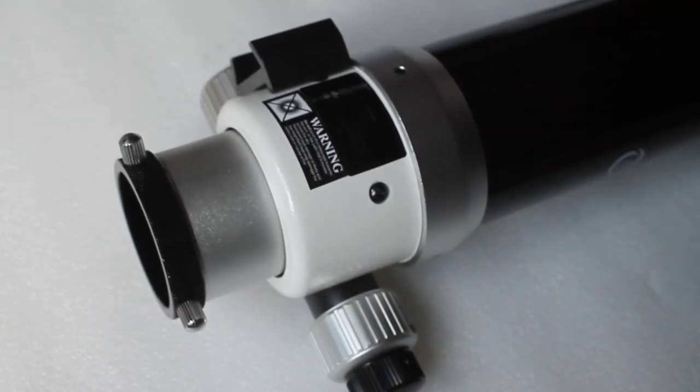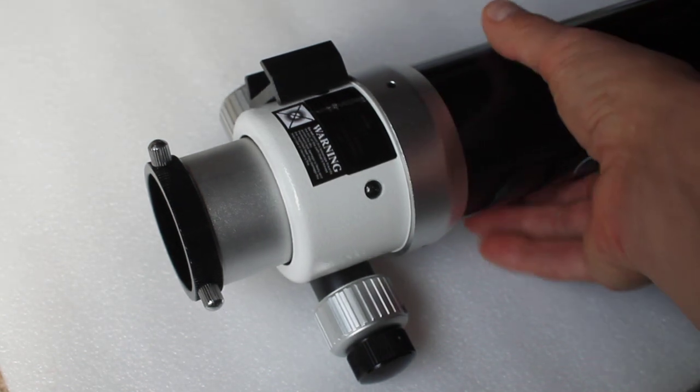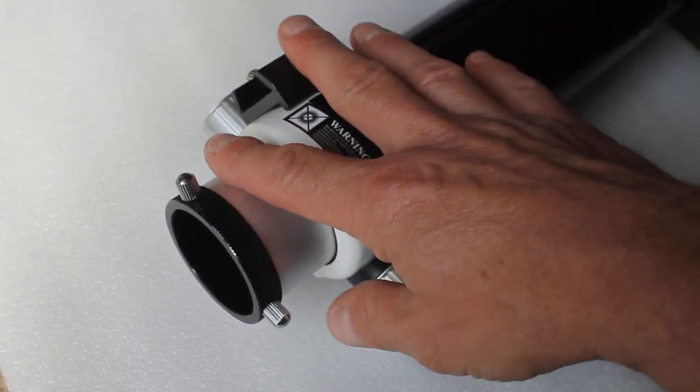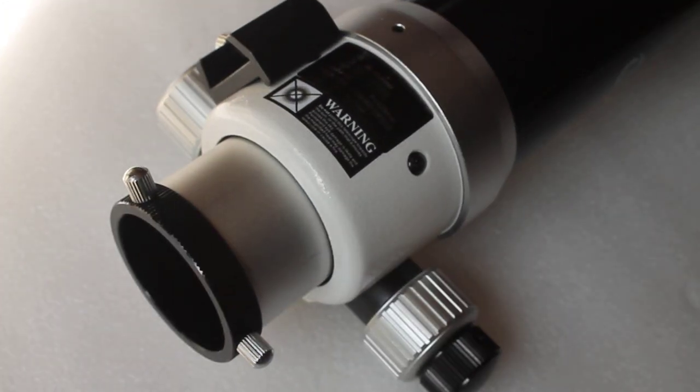If you've got a heavy eyepiece and diagonal or a camera and you don't want the focuser to move, especially with long exposure photography, that's ideal for keeping everything in place. So that's really what you get with the focuser side of things.